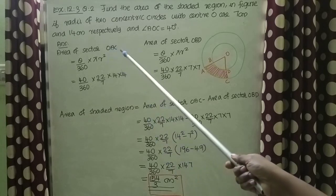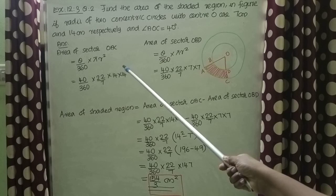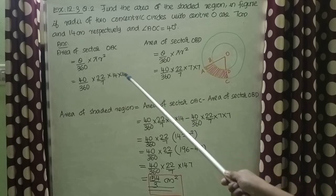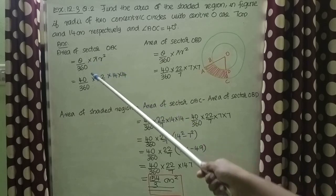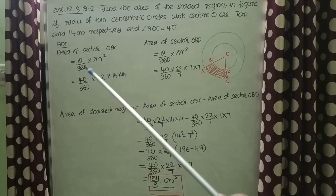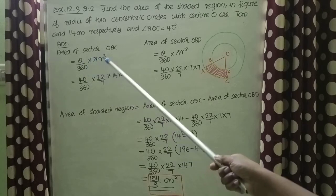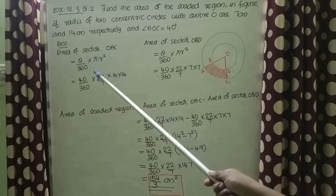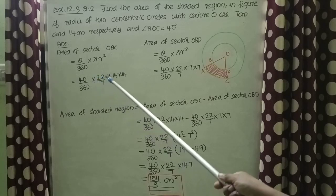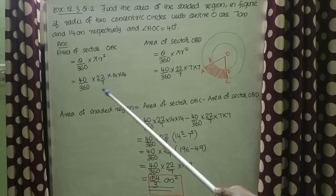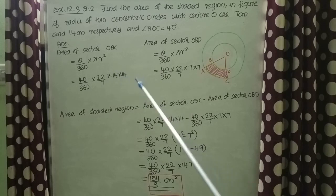Area of sector OAC: radius equals 14 cm and theta equals 40 degrees. That is equal to theta by 360 into pi R square, equal to 40 by 360 into 22 by 7 into 14 into 14.